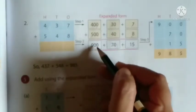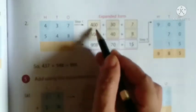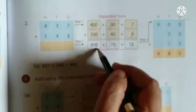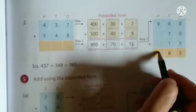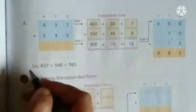Step 2: add the values at each place. 7 plus 8 is 15. Then 30 plus 40: 0 plus 0 is 0, 3 plus 4 is 7, so 70. Then 400 plus 500: 0 plus 0 is 0, 0 plus 0 is 0, 4 plus 5 is 9, so 900. That gives 900 plus 70 plus 15. Step 3: find the sum. 900 plus 70 plus 15 — ones: 0 plus 0 plus 5 is 5; tens: 0 plus 7 plus 1 is 8; hundreds: 9 remains. So 437 plus 548 is equal to 985.